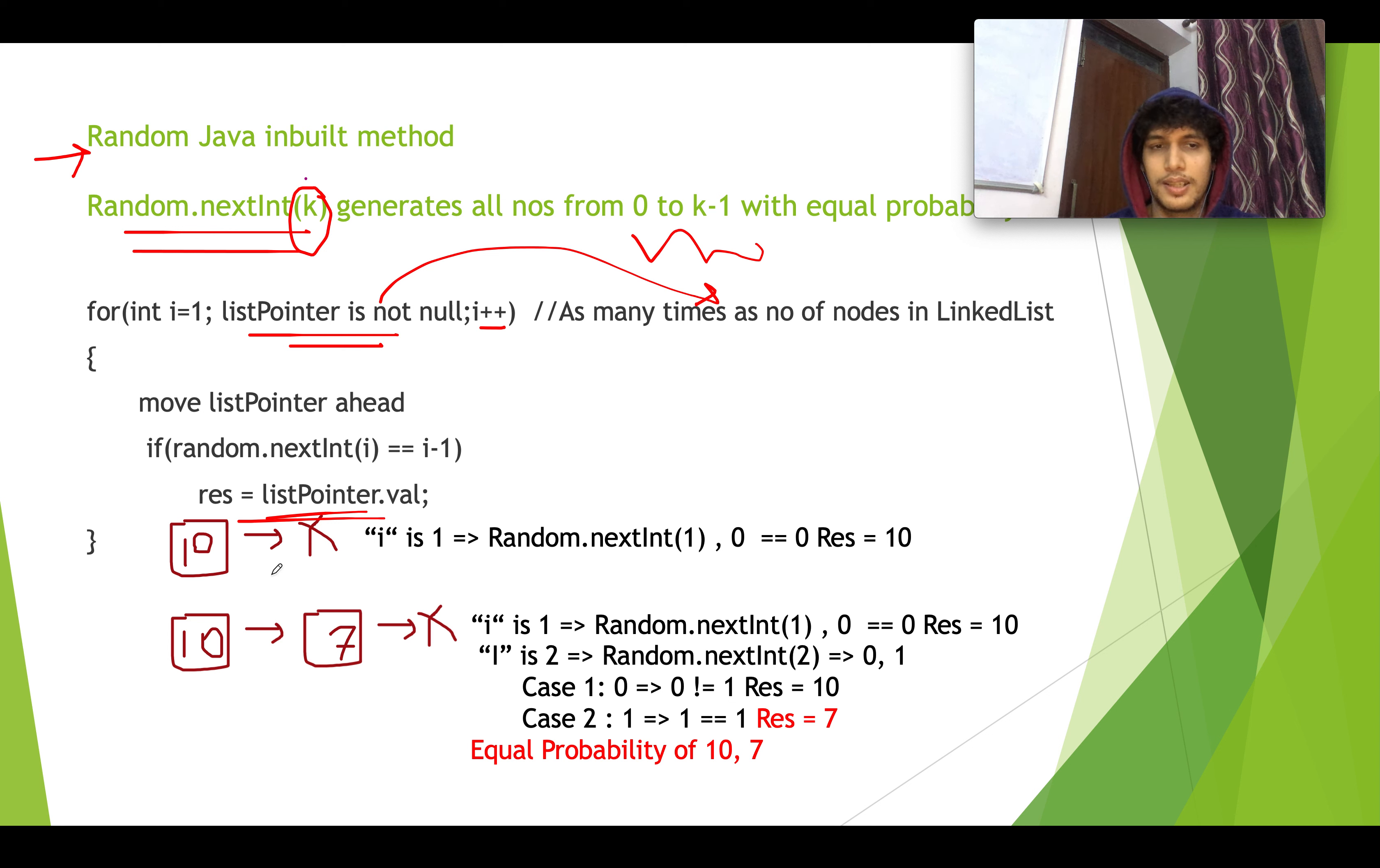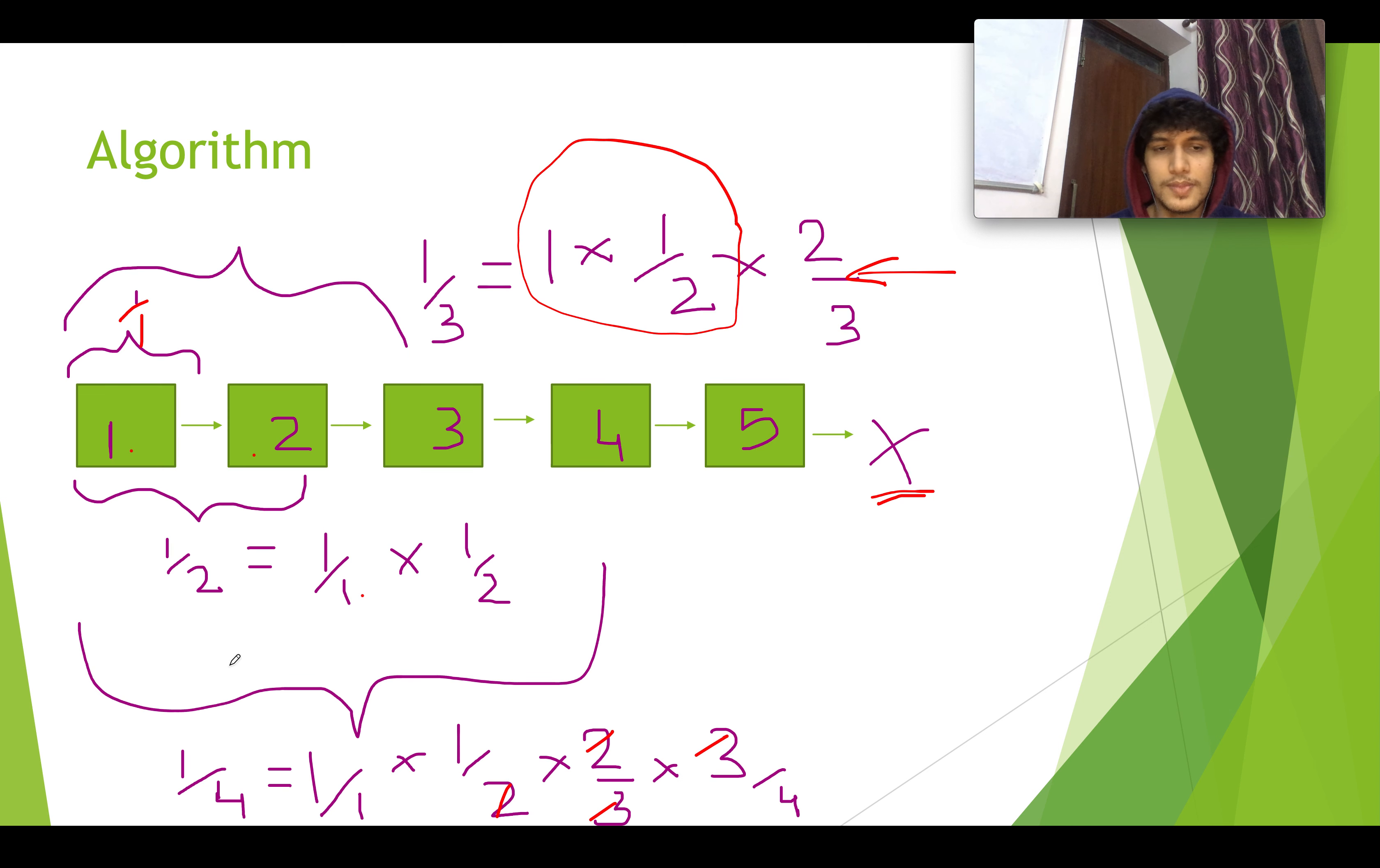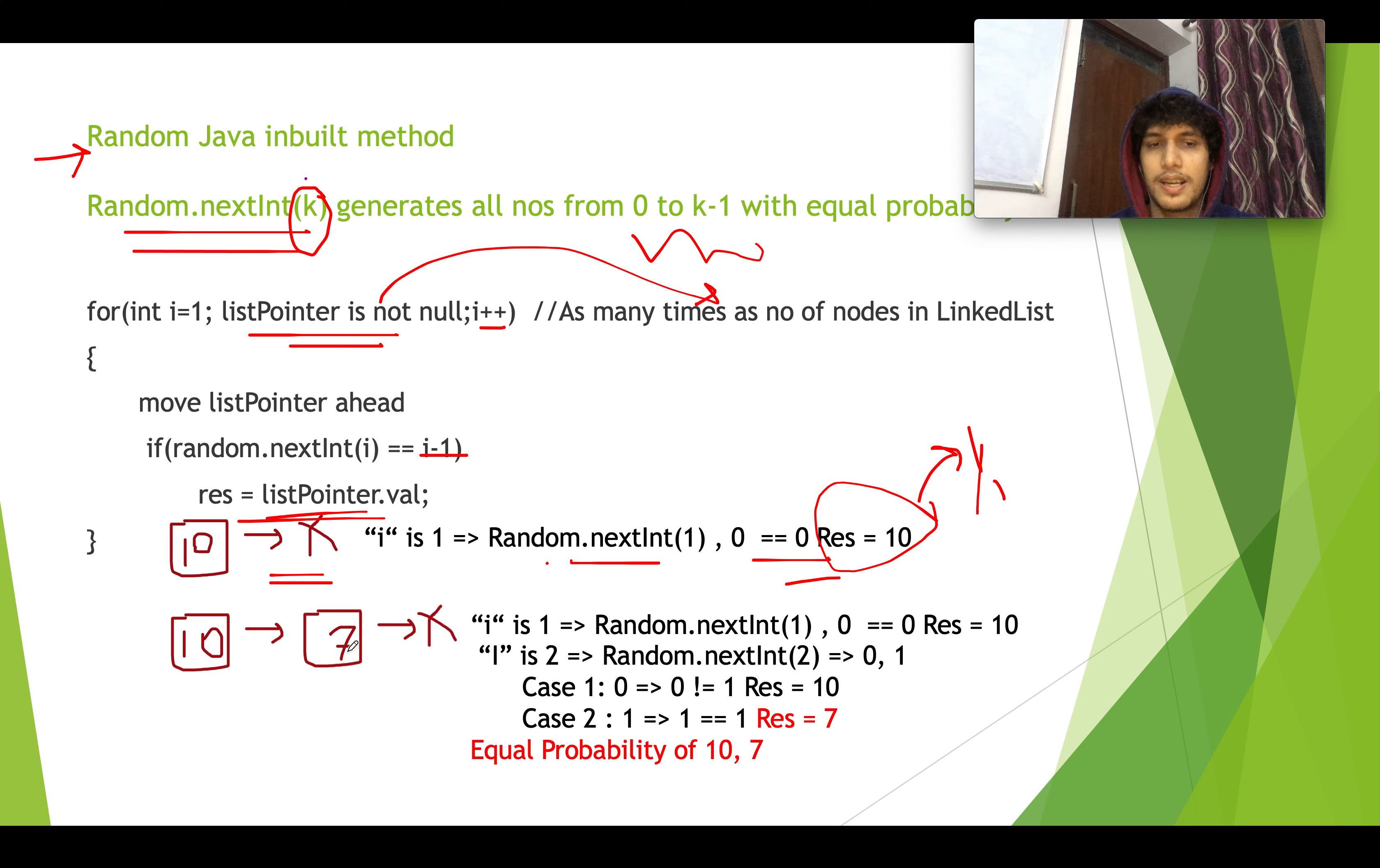Now let's explain how it works. Let's take an example where the first node has the value of 10 and the linked list is having only one node. So i in this case is 1, random.nextInt will generate 0 and is equal to i-1. That means it becomes true and result is set to 10, which should have been the case. The probability is 100% now. It's 1 by 1 and 100% you will get 10 in the result.